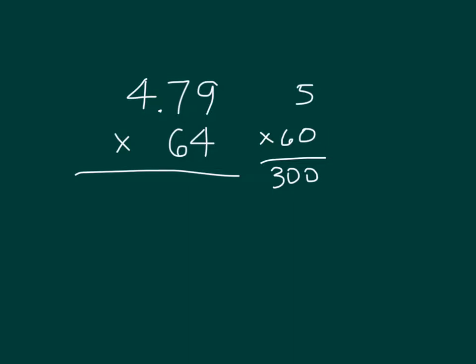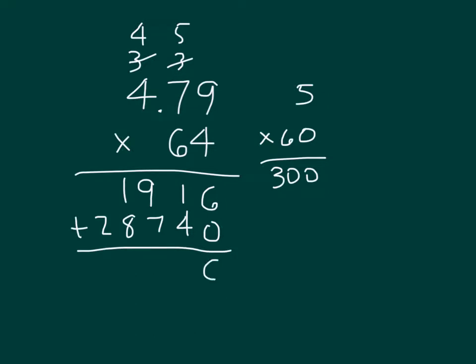Using that standard algorithm. 4 times 9 is 36, 6 regroup of 3. 4 times 7, 28 plus 3, 31, 1 regroup of 3. 4 times 4 is 16 plus 3 is 19. Cross out my regroups, place a 0. 6 times 9 is 54, 4 regroup of 5. 6 times 7, 42 plus 5 is 47, 7 regroup of 4. And 6 times 4 is 24 plus 4 is 28.